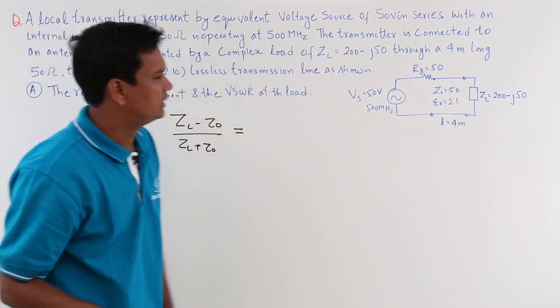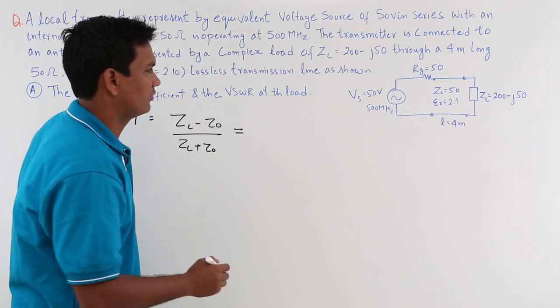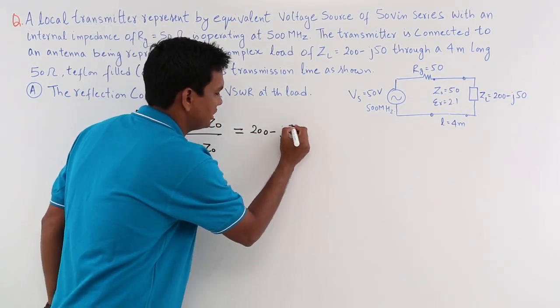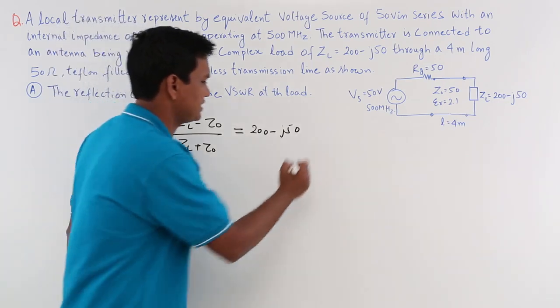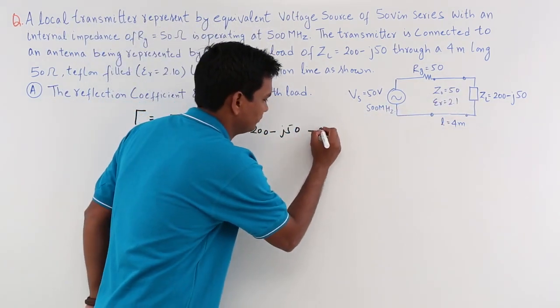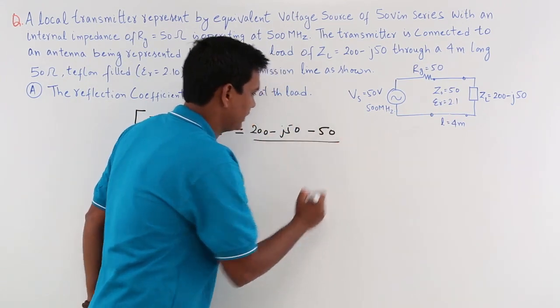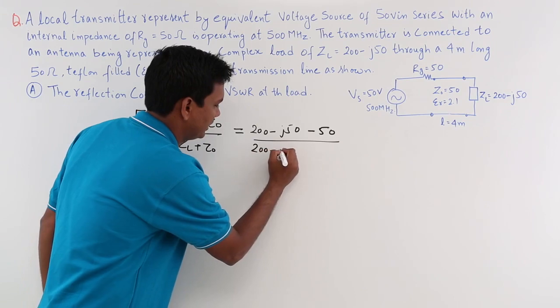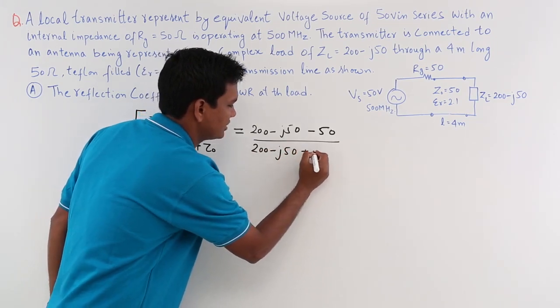What I can do is: ZL is 200 minus j50 minus Z0, which is 50, divided by 200 minus j50 plus 50.